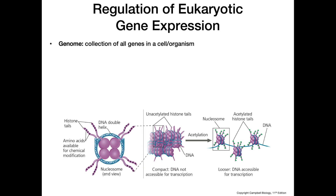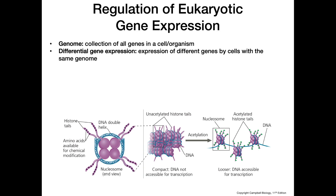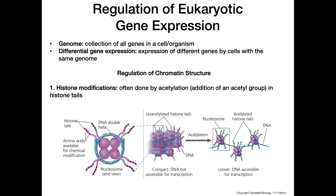So how are cells able to do this? They're able to do that through something called differential gene expression. Differential gene expression is the expression of different genes by cells with the same genome. For example, neurons in our body have the same genes as our endocrine cells in our different endocrine glands, but the difference is in what genes are being expressed.